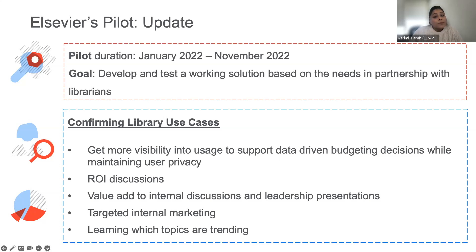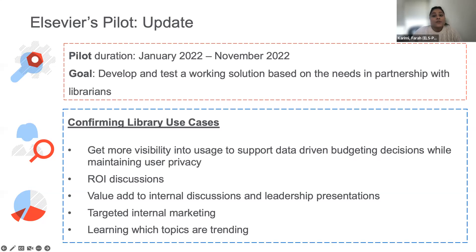We were also able to verify the value that this adds for ROI discussions, as well as any other internal discussions and leadership presentations. The information was also seen as useful in identifying areas for targeted internal communication, as well as trending topics. And viewing the data in this way is prompting librarians to think of ways to optimize the report for different purposes.